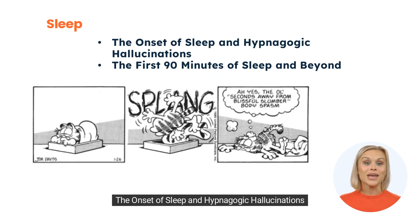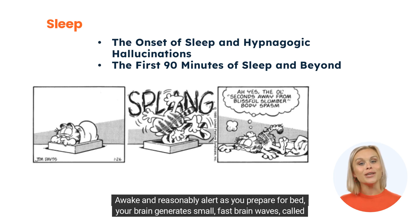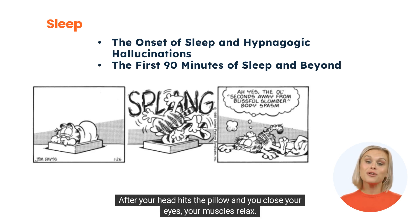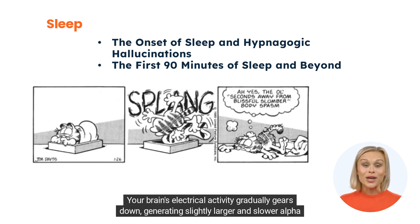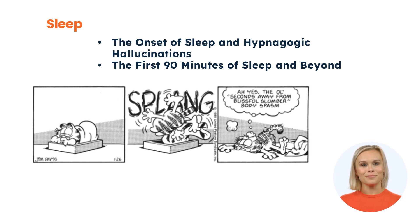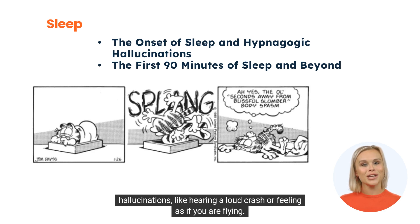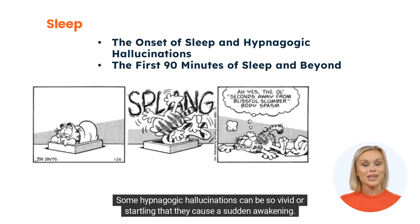The onset of sleep and hypnagogic hallucinations: Awake and reasonably alert as you prepare for bed, your brain generates small, fast brain waves called beta brain waves. After your head hits the pillow and you close your eyes, your muscles relax. Your brain's electrical activity gradually gears down, generating slightly larger and slower alpha brain waves. During this drowsy, pre-sleep phase, you may experience odd but vividly realistic sensations called hypnagogic hallucinations, like hearing a loud crash or feeling as if you were flying. Some hypnagogic hallucinations can be so vivid or startling that they cause a sudden awakening.